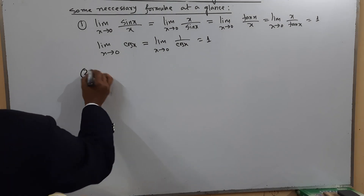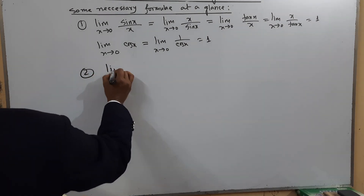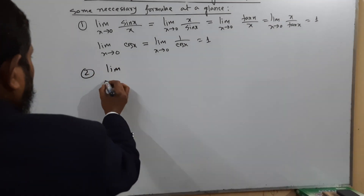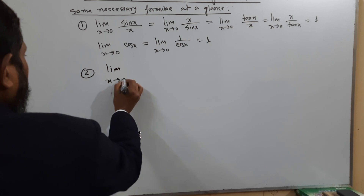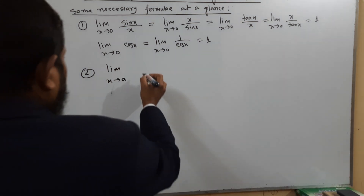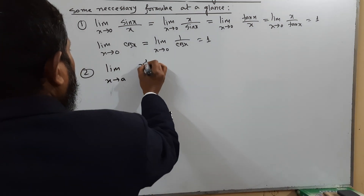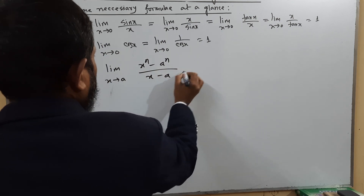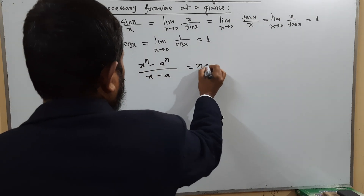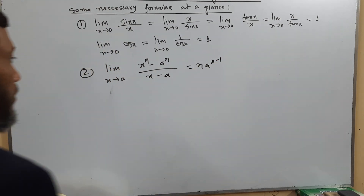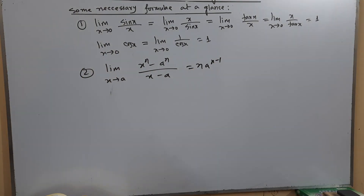Second formula: limit x tends to a of (x^n − a^n) / (x − a) equals n·a^(n−1).